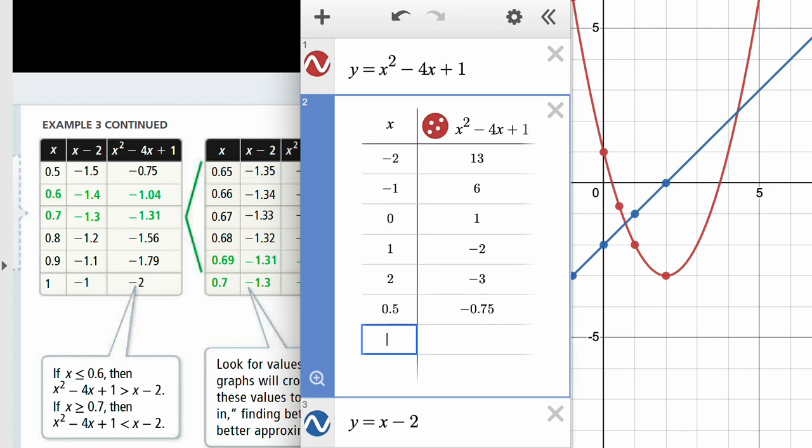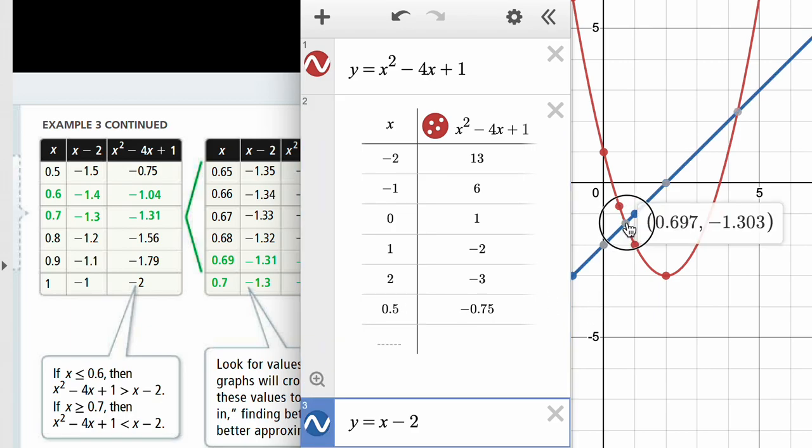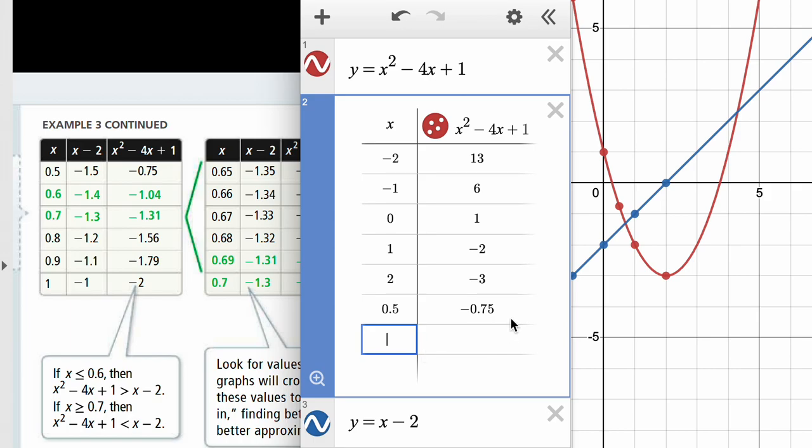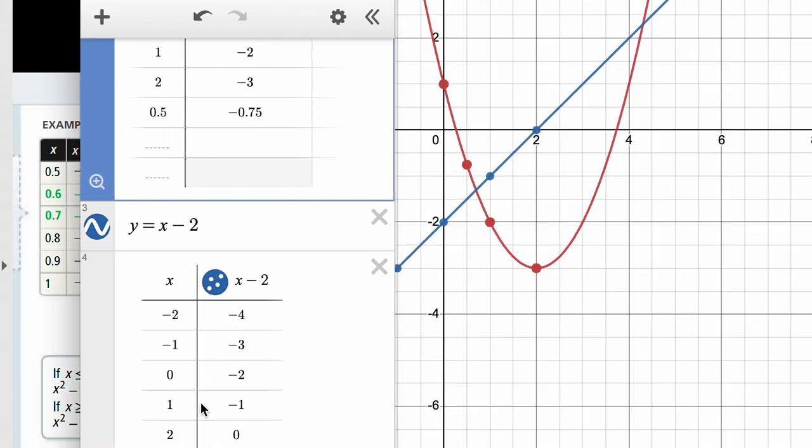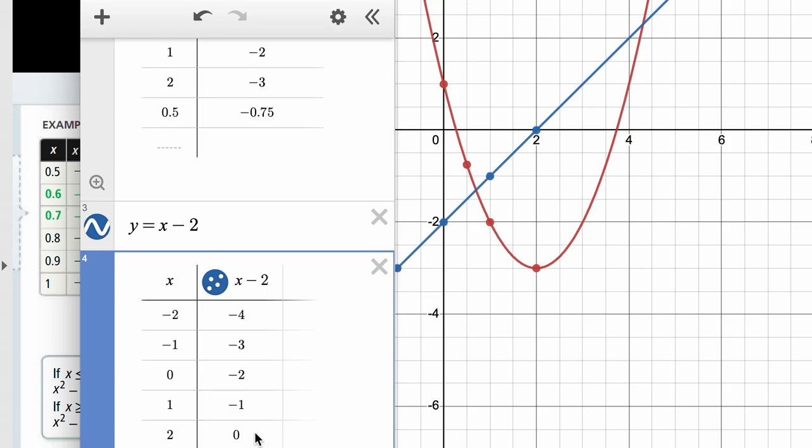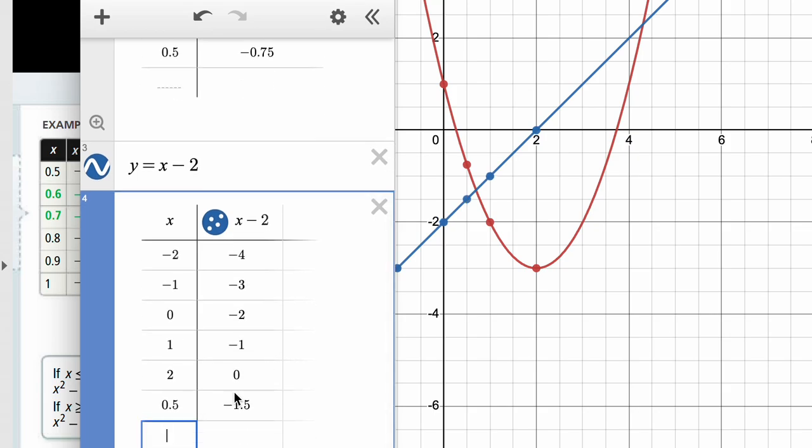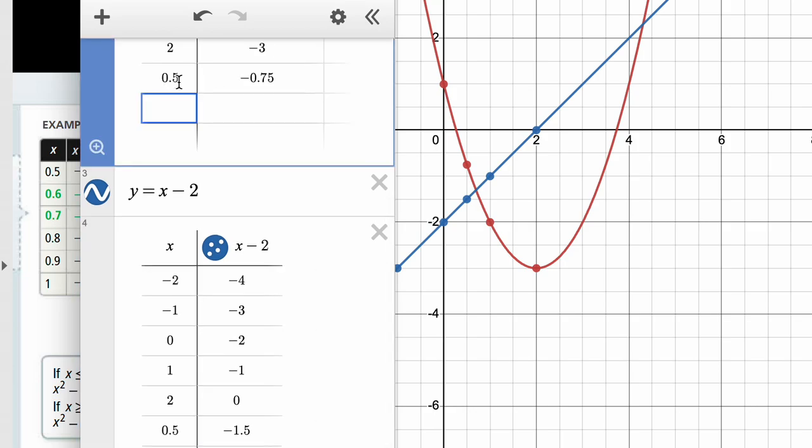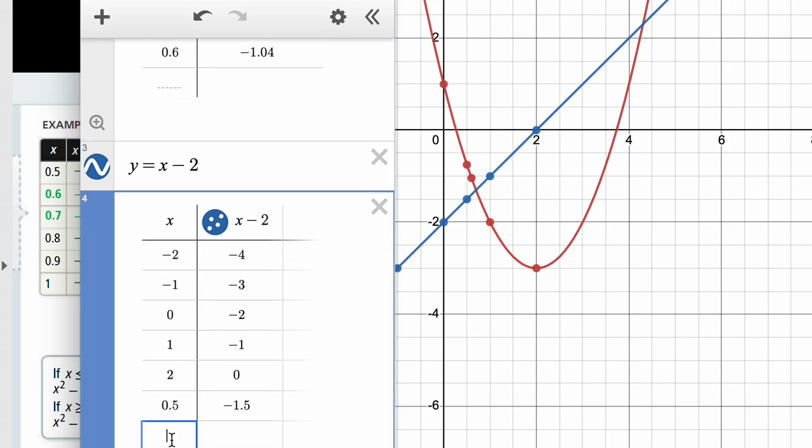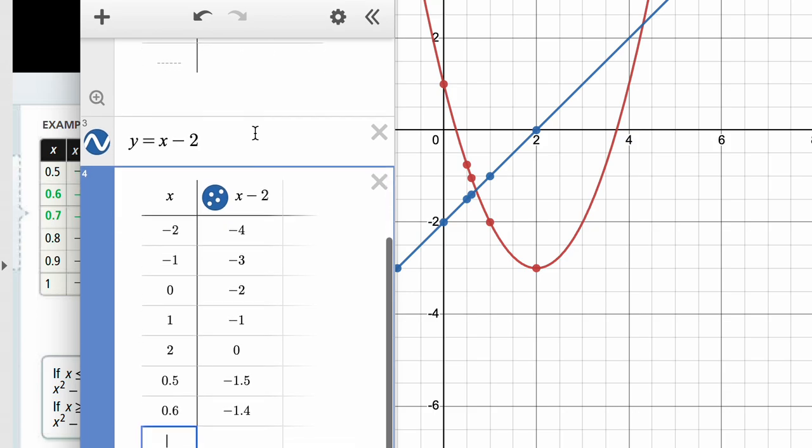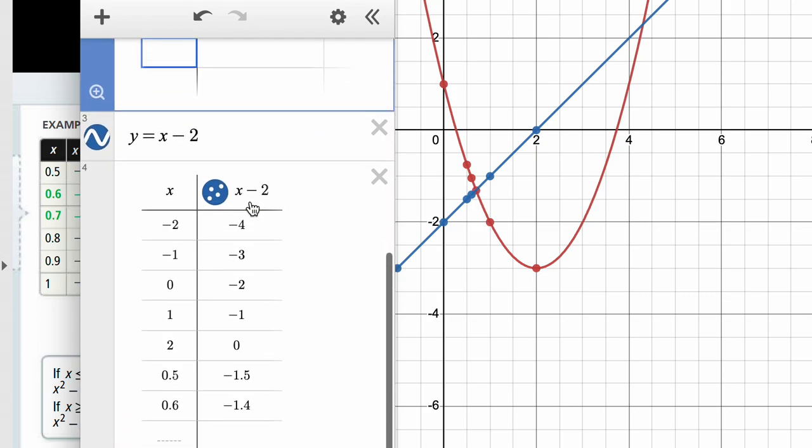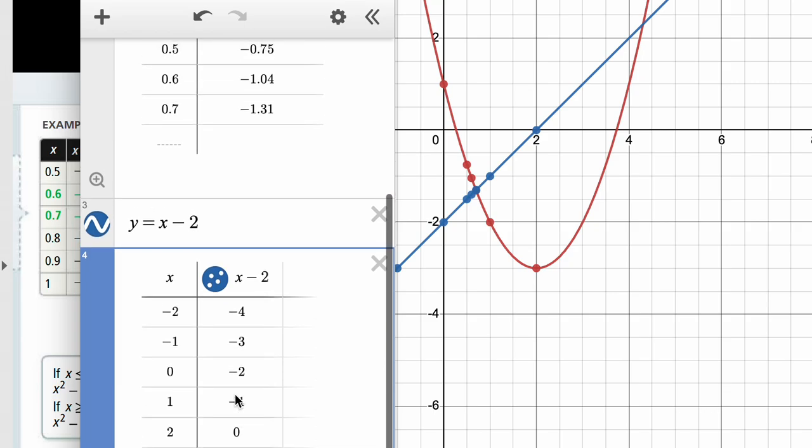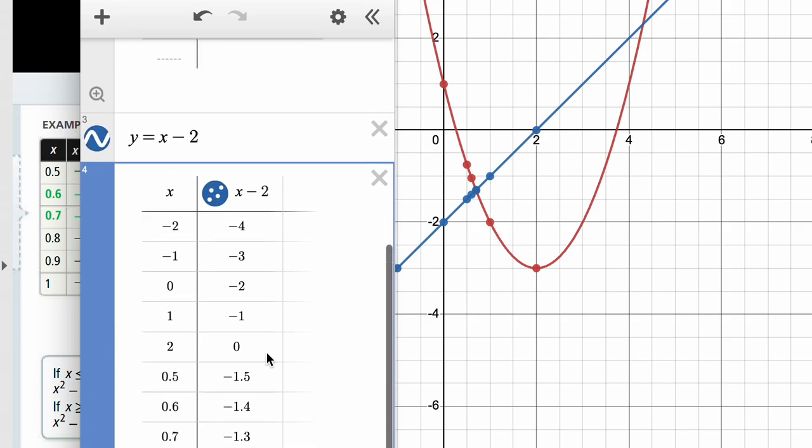So I would say 0.5, but that would be negative 0.75 in the first equation. And 0.5 on the second equation would be negative 1.5. So they're not even close. So we will try to get closer by guessing higher decimals. And now it's getting closer a little bit. The y values are getting closer. 0.7 gives you negative 1.31, negative 1.3 here. So it's really close now.